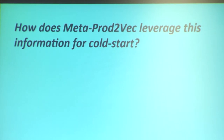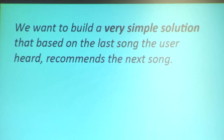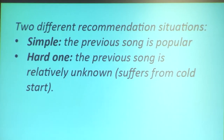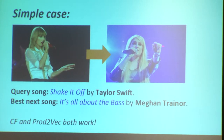Let's see how our method leverages this extra information with a motivating example. Let's say we try to do a very simple recommender system for songs — look at the last song the user listened to and recommend the next song, so item-to-item recommendation. This will have two situations: the simple case where the query song is popular and has good support in the data to see what it's similar to via collaborative filtering. And the hard case where the previous song has relatively low volume, so it suffers from cold start.